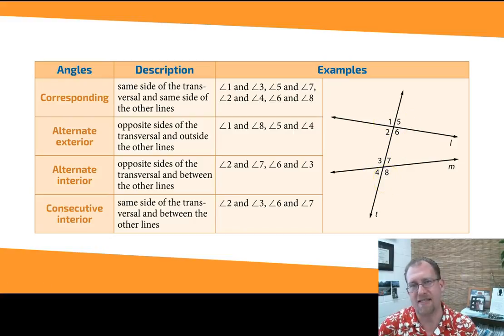Alternate exterior means that they're on the opposite sides of these intersections. So five is in the upper right. Four is in the lower left. Those are alternate exterior angles. They're on the opposite sides of the transversal and on opposite sides of the lines that the transversal is cutting. So another example would be one and eight. Those are alternate exterior angles.